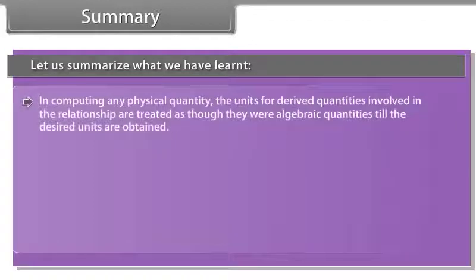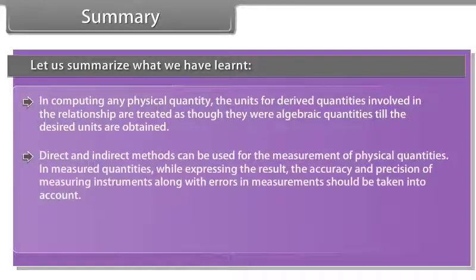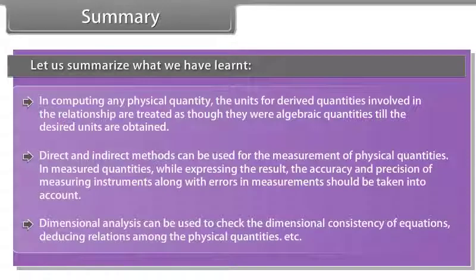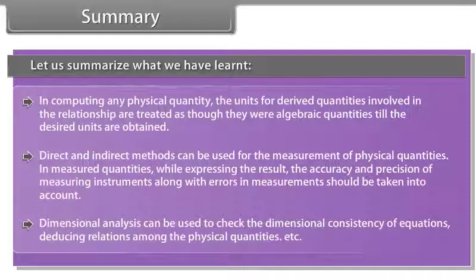In computing any physical quantity, the units for derived quantities involved in the relationship are treated as though they were algebraic quantities till the desired units are obtained. Direct and indirect methods can be used for the measurement of physical quantities. In measured quantities, while expressing the result, the accuracy and precision of measuring instruments along with errors in measurement should be taken into account. Dimensional analysis can be used to check the dimensional consistency of equations, deducing relations among the physical quantities, etc.